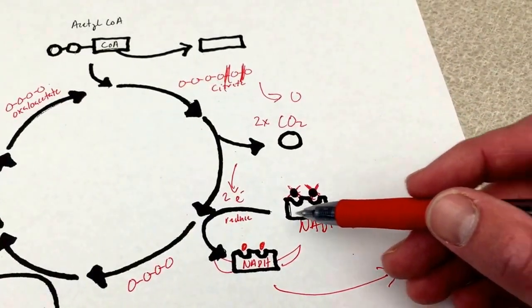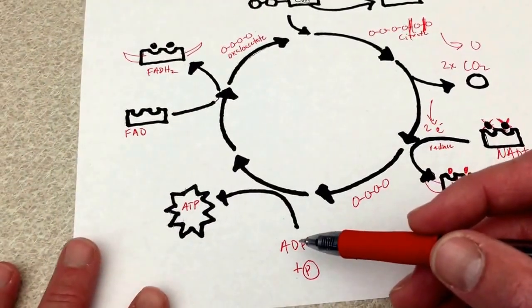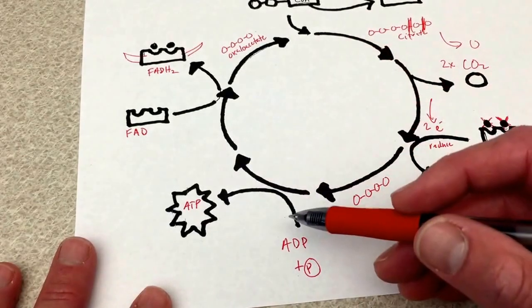Every time we break off a carbon we release electrons that get loaded onto NAD+ and reduce it to NADH. In this process we make a little bit of ATP.